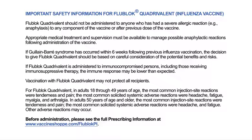Vaccination with FluBlock Quadrivalent may not protect all recipients. For adults 18 through 49 years of age, the most common injection site reactions were tenderness and pain, and the most common solicited systemic adverse reactions were headache, fatigue, myalgia, and arthralgia. In adults 50 years of age and older, the most common injection site reactions were tenderness and pain, and the most common solicited systemic adverse reactions were headache and fatigue. Other adverse reactions may occur.